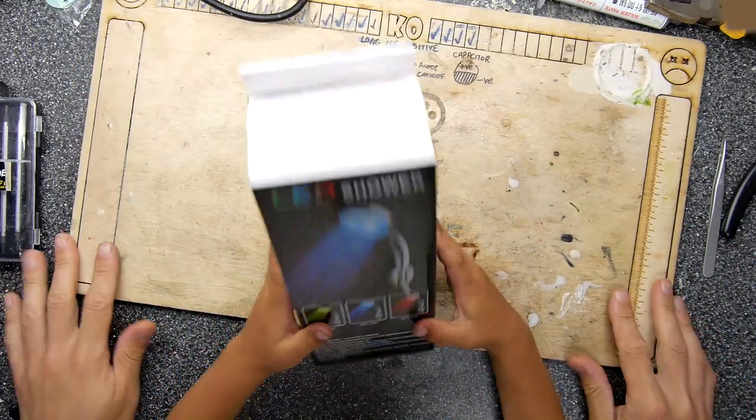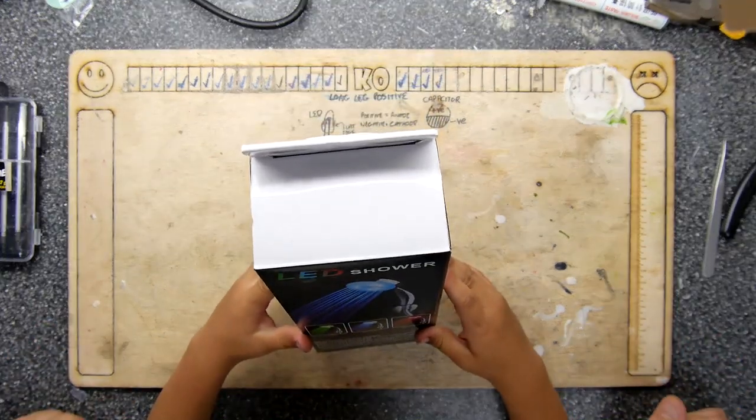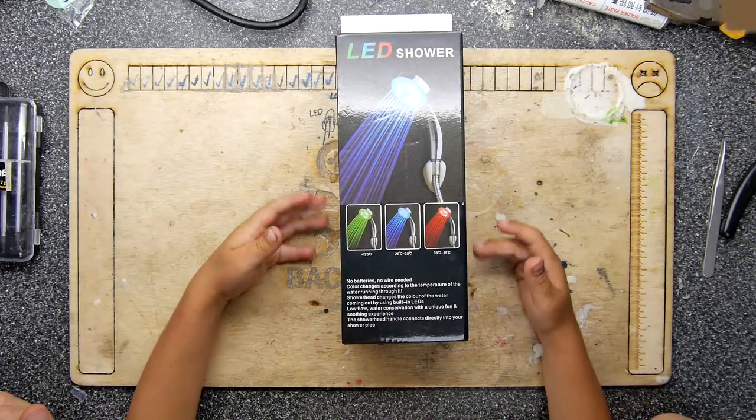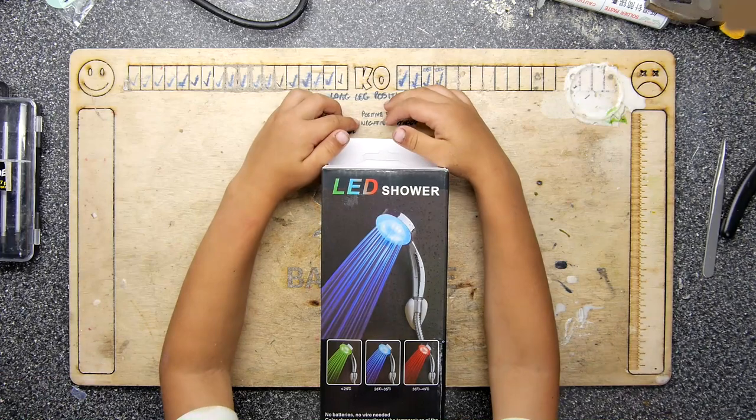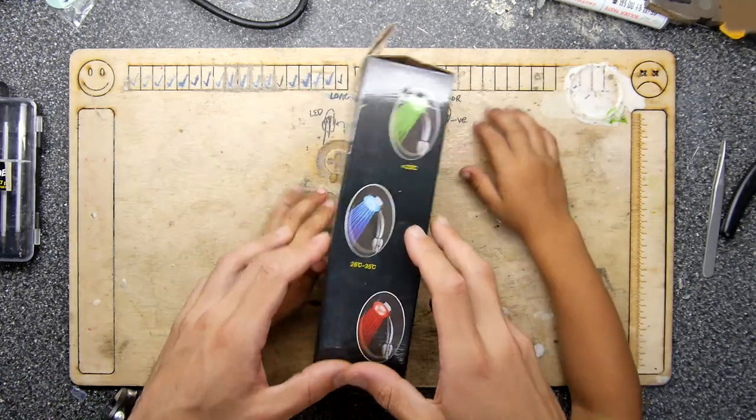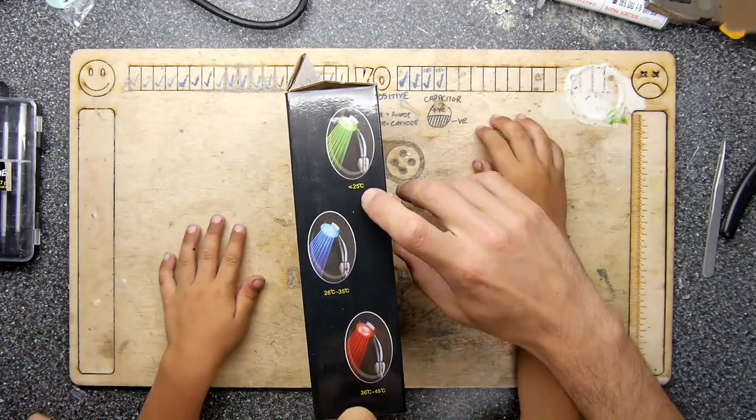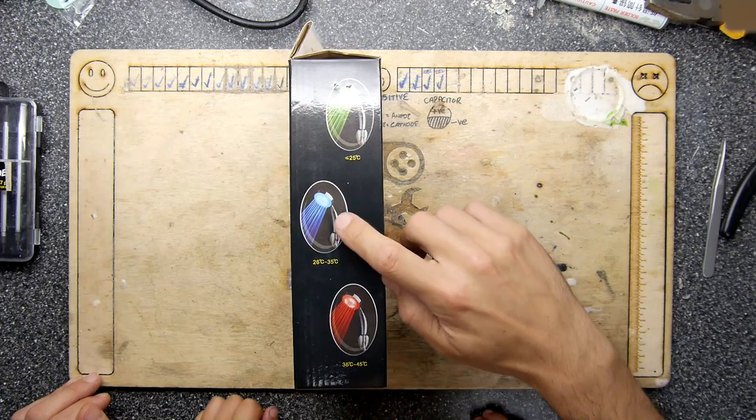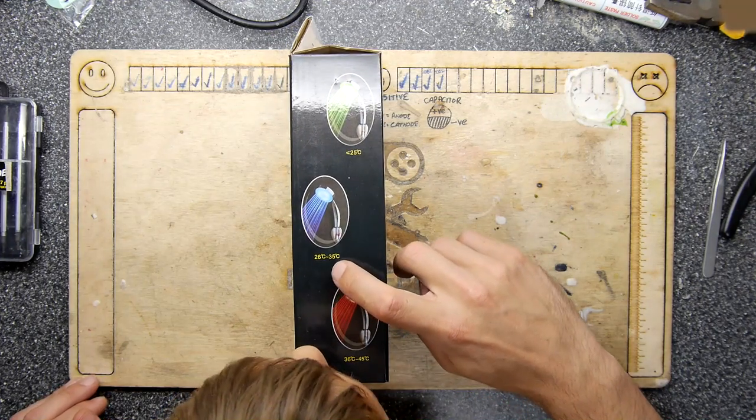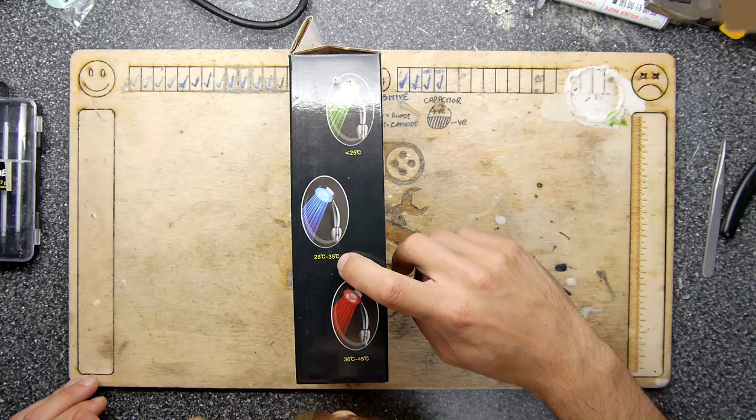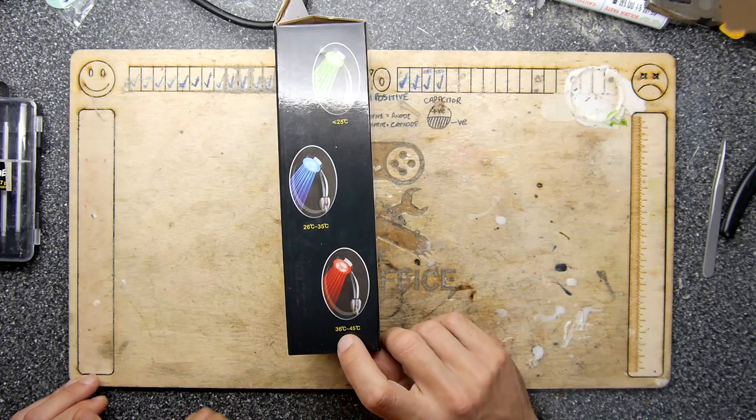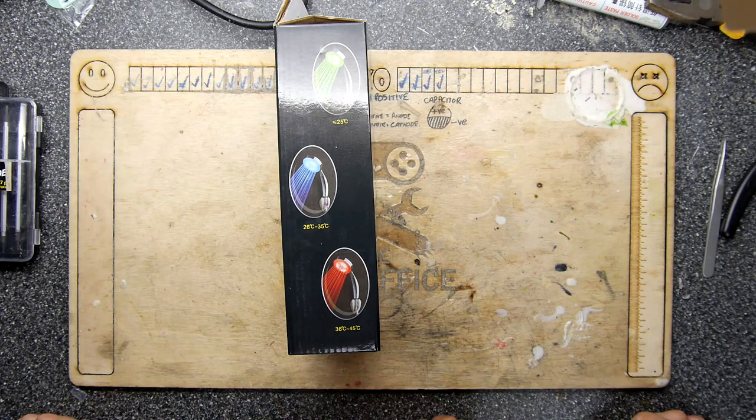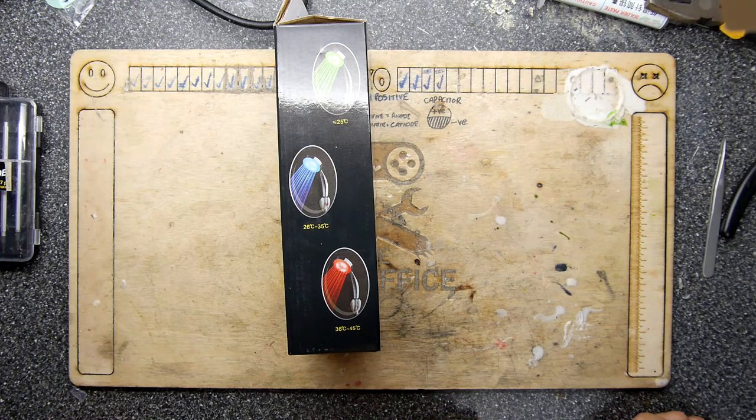Now tell everybody about this thing. When it's green, it's less than 25 degrees C, and it's just right when it's between 26 and 35 degrees C, and it's too hot when it's between 36 and 45 degrees.